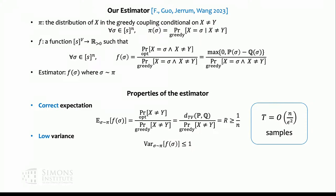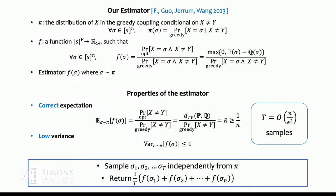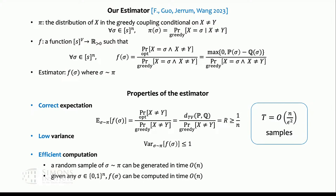Given these two properties, we have a simple Monte Carlo algorithm: draw t independent samples sigma_1, ..., sigma_t from distribution pi, compute f(sigma_1), ..., f(sigma_t), and output the average. By Chebyshev's inequality, this approximates the ratio. Since we can exactly compute P_greedy(x ≠ y), we can then estimate the TV distance between p and q. To complete the algorithm we need: (1) how to sample sigma from pi, and (2) how to compute f(sigma).